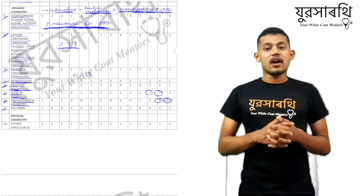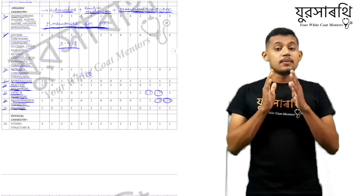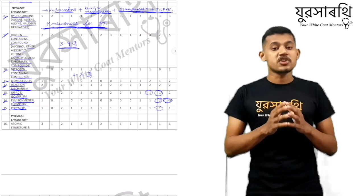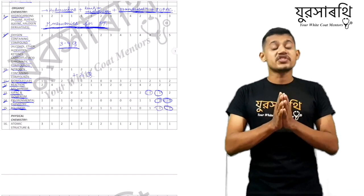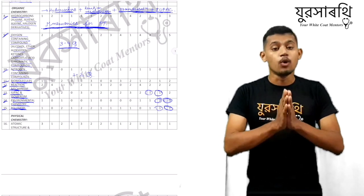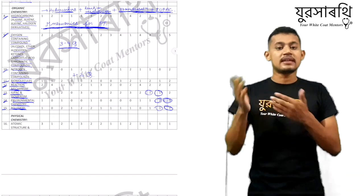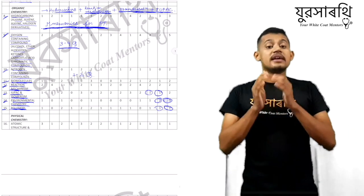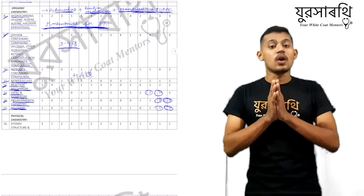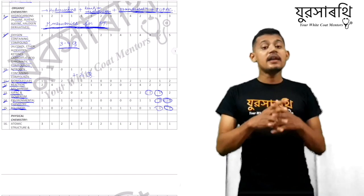Next after environmental chemistry, we have polymers. The most interesting fact about polymers is that it is a very small chapter, they ask one question every year, and there are few selective questions from it. You cannot skip it — many people think they don't ask questions from polymers, but it is a very important topic because it's small and they ask one to two questions every year.